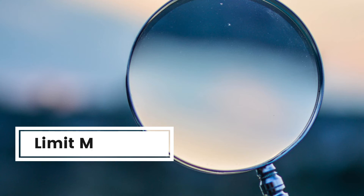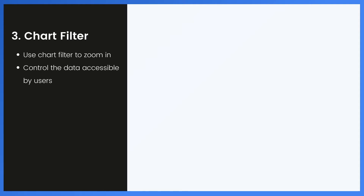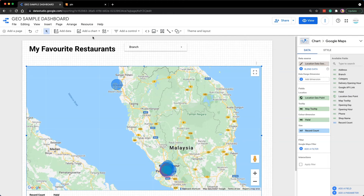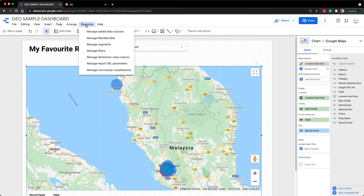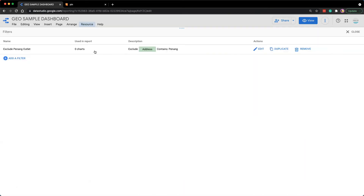But there are some cases where we want to limit the view to a specific region without allowing users to have visibility or control over it. In this case, you could add the filter directly in the chart. For illustration, we are going to limit the dashboard view to exclude Penang outlets. Navigate to Resource and click on Manage Filters.